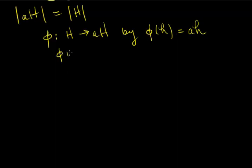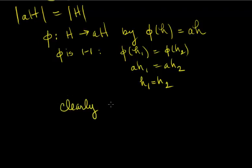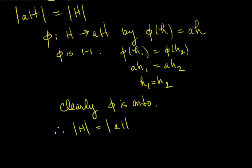φ is clearly one-to-one: if φ(H1) equals φ(H2), then AH1 equals AH2, and multiplying on the left by A inverse gives H1 equals H2. So φ is a one-to-one mapping from H to AH. By the definition of the map, φ is clearly onto the coset AH. Therefore, the order of H is the same as the order of any one of its cosets.